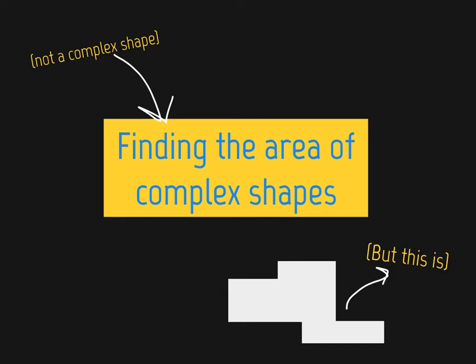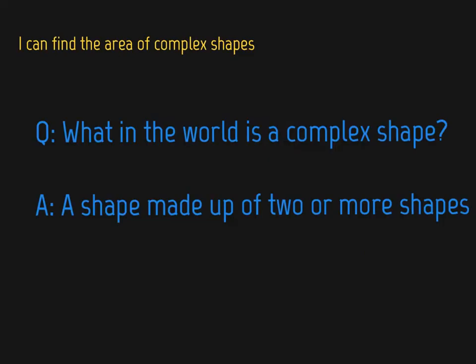Hi everybody! In our video today, we're going to be talking about finding the area of complex shapes. First off, what in the world is a complex shape? A complex shape is a shape that is made up of two or more shapes.